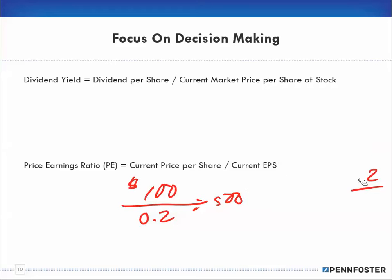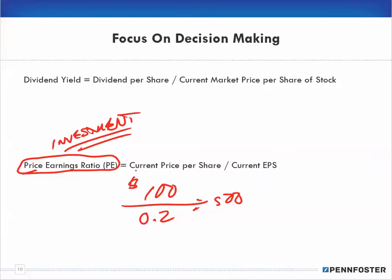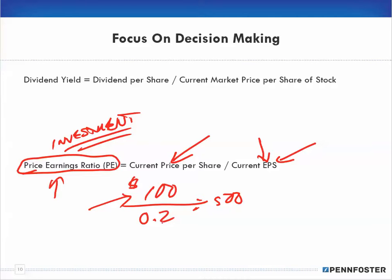So if my current price per share is $100 and my EPS is $0.20, then $100 divided by $0.20 gives a PE ratio of 500. From an investment perspective, a lot of people pay close attention to this PE ratio, because it combines the price of the stock, the earnings, and the shares. A higher PE ratio generally means you want to invest less, because the price is overvalued relative to earnings.